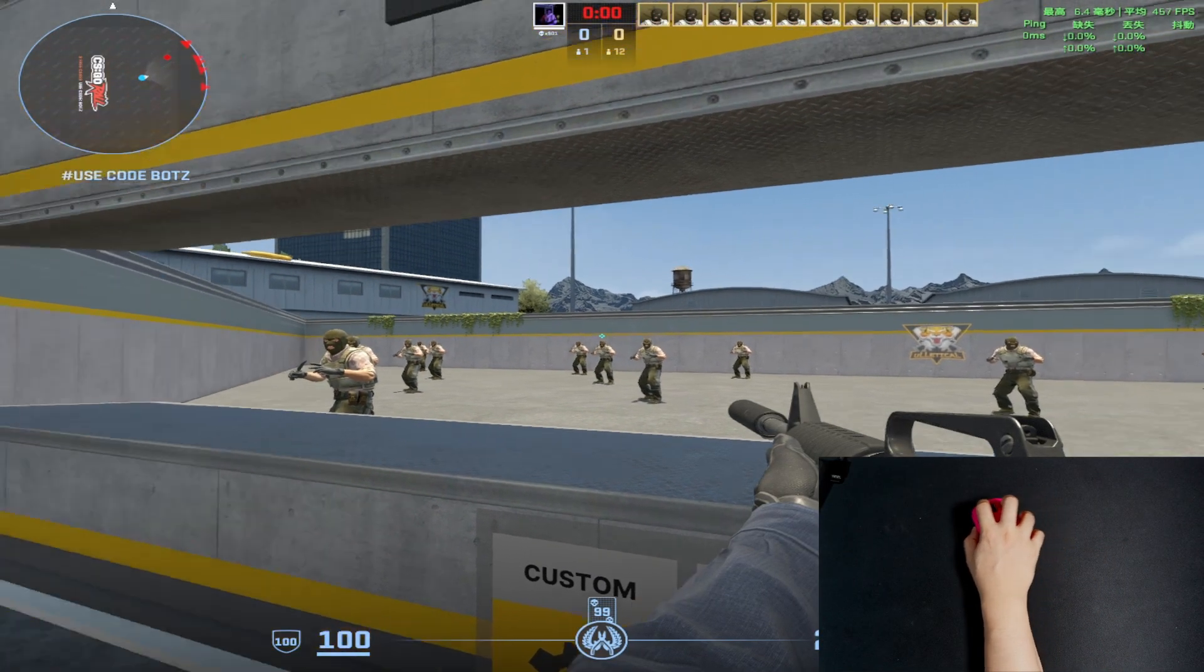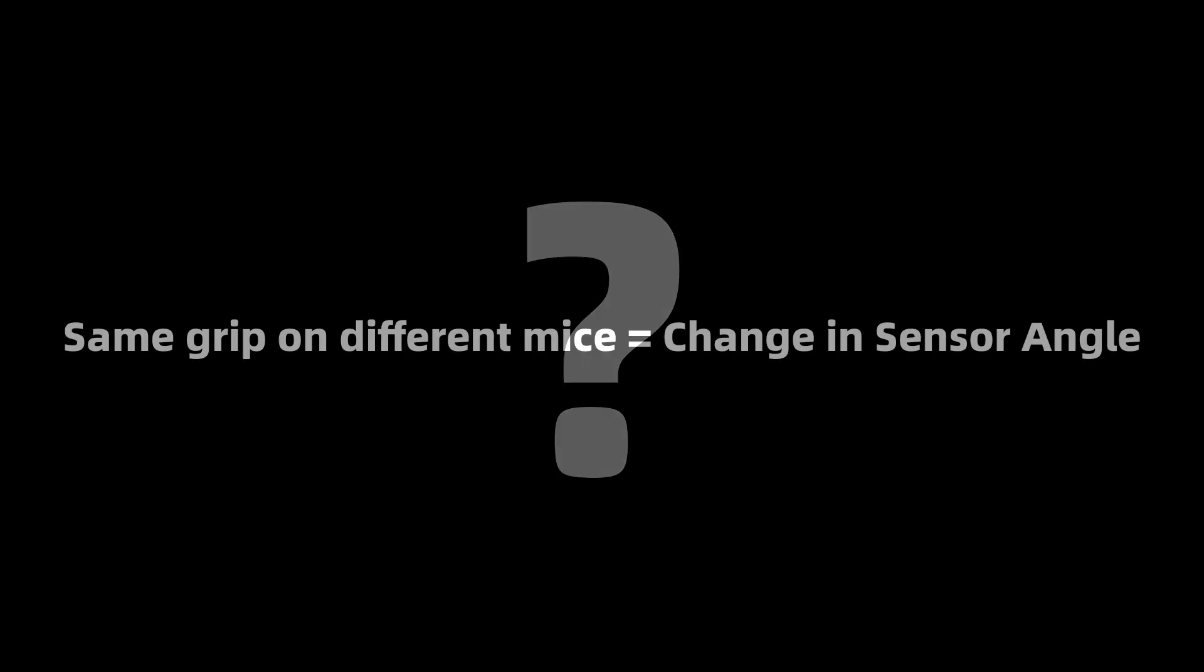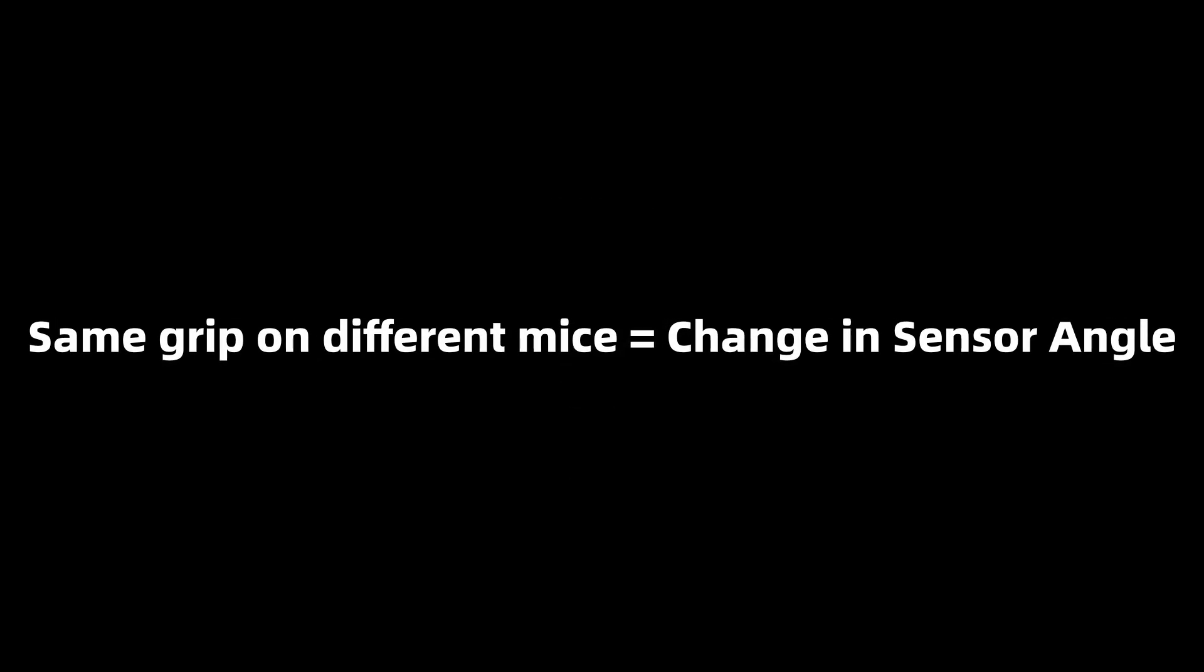A question comes to my head. Why did a modern mouse feel worse than an old classic? After some research, the real reason is the sensor angle will change if we use the same grip on different mice.